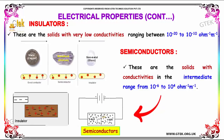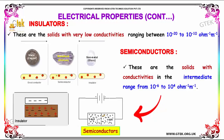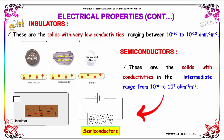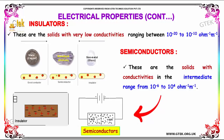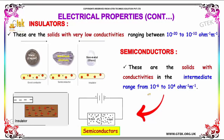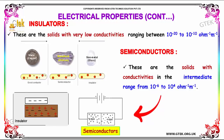Semiconductors are solids with conductivities in the intermediate range of 10⁻⁶ to 10⁻⁴ per ohm per meter.